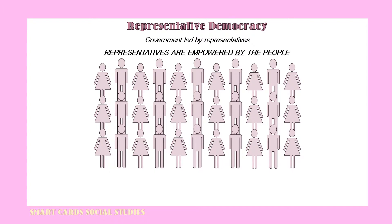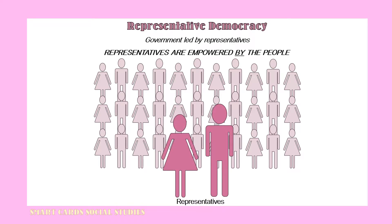A representative democracy differs from a direct democracy in that elected officials or representatives are empowered by the people to debate, deliberate, and vote on laws to govern society.